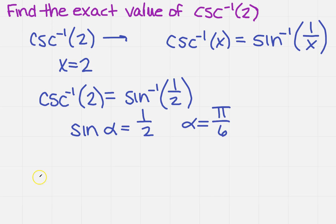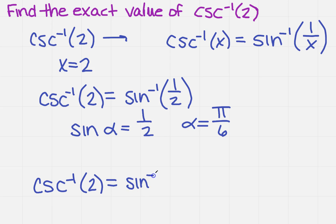So rewriting it with the given: the inverse cosecant of 2 equals the inverse sine of 1 half, which equals pi over 6.